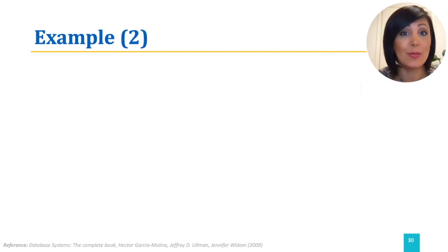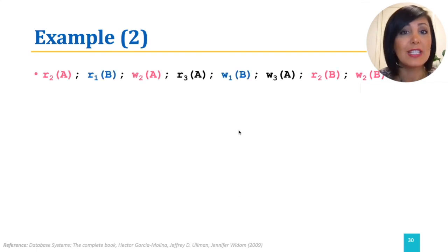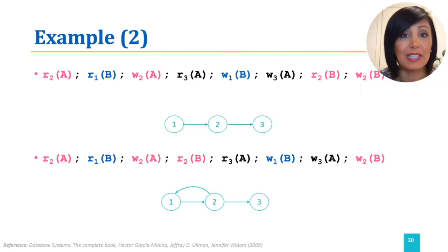Now, time for you to practice with some more details. Following the same steps on these two schedules, we can see that there is no cycle in the first graph, and therefore the first schedule is conflict serializable. The second graph has a cycle due to a conflict on resource B, and therefore it is not conflict serializable.